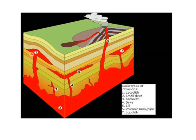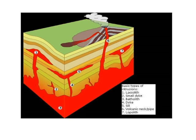The laccolith gets inserted into sedimentary rock layers and pushes them up, while lopoliths can cause sedimentary rock layers to be basined. We looked at that with the Michalisberg and the Bushveld Igneous Complex. Batholiths, as they move up, can also cause strata to tilt — go back to the previous exercise to review that.